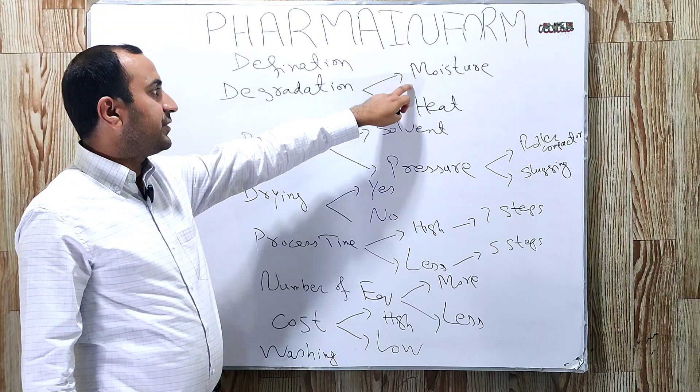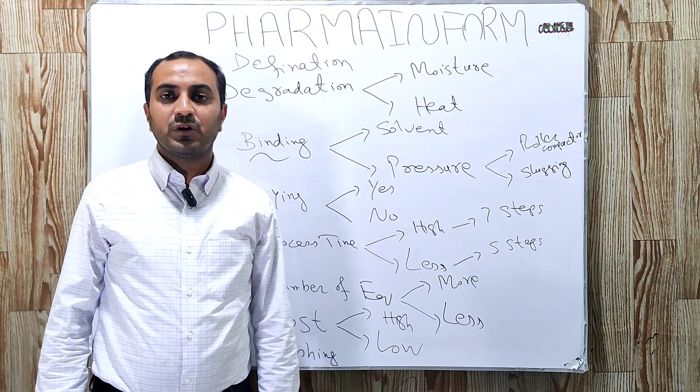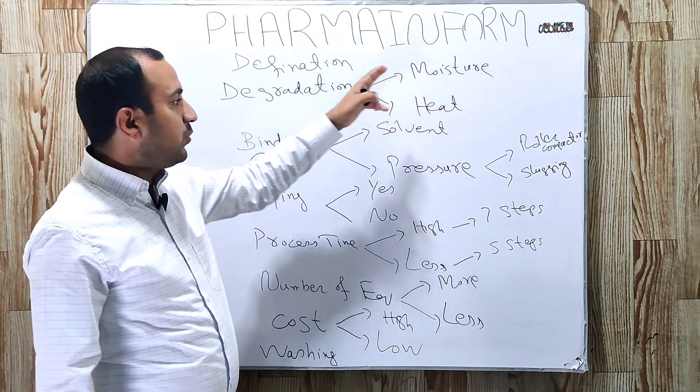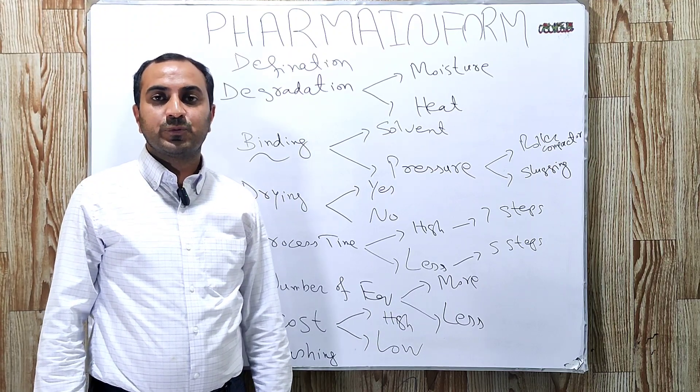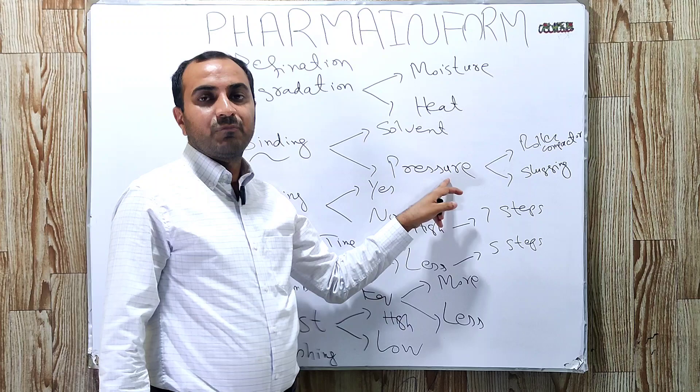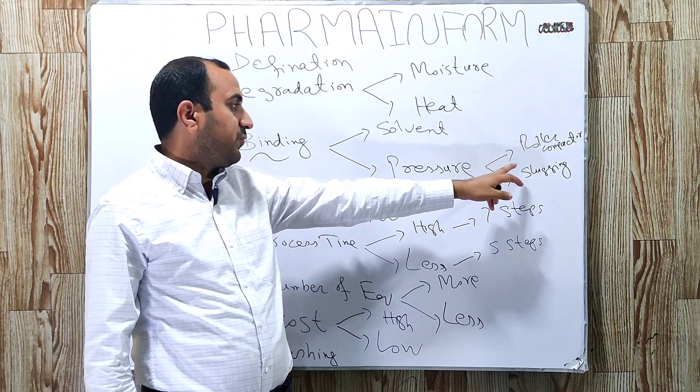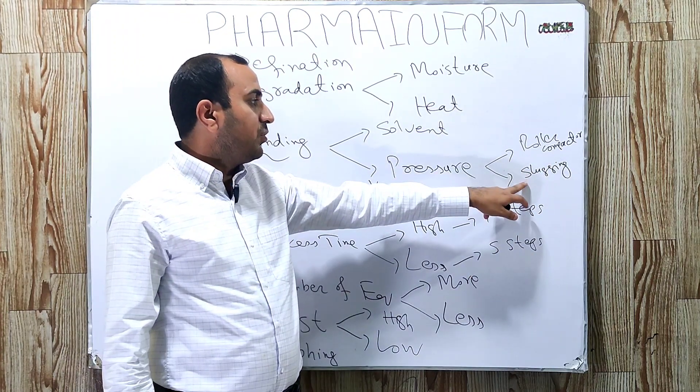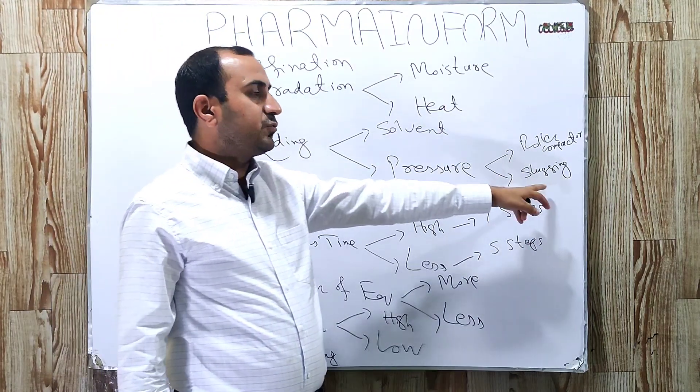But in dry granulation, this method is used for products which are sensitive to heat and moisture, so we cannot use solvent and heat. Binding is provided by pressure, and for pressure we use roller compaction method or slugging method. If you want to know more about these two methods, the link of the whole granulation playlist is given in the description.